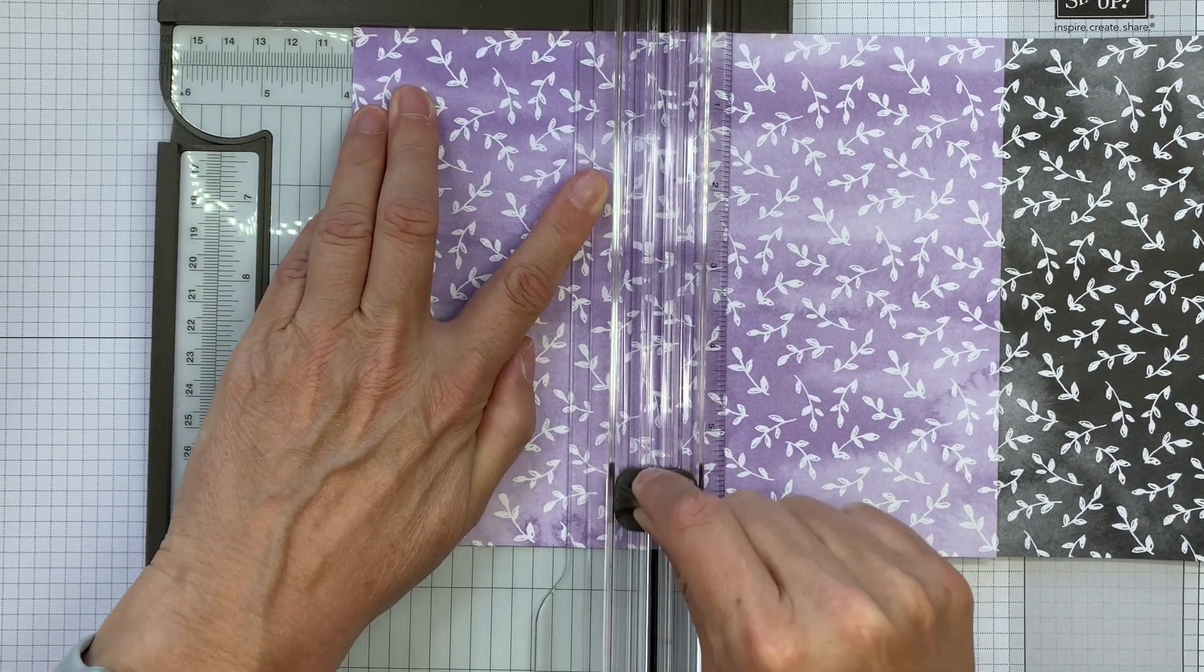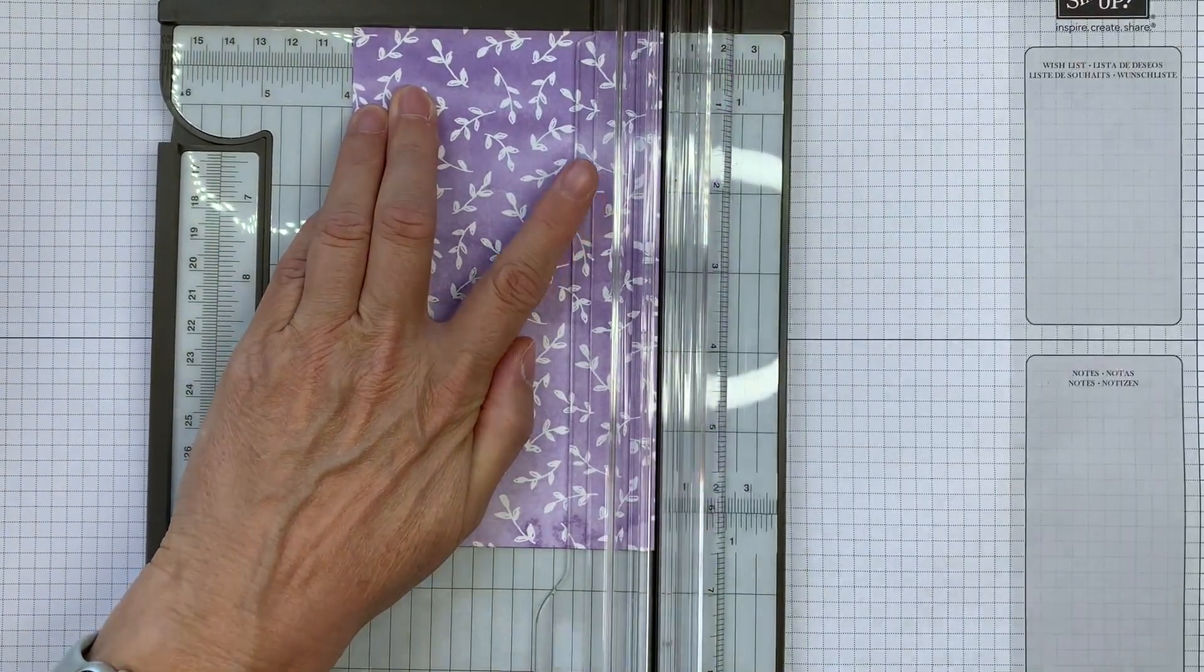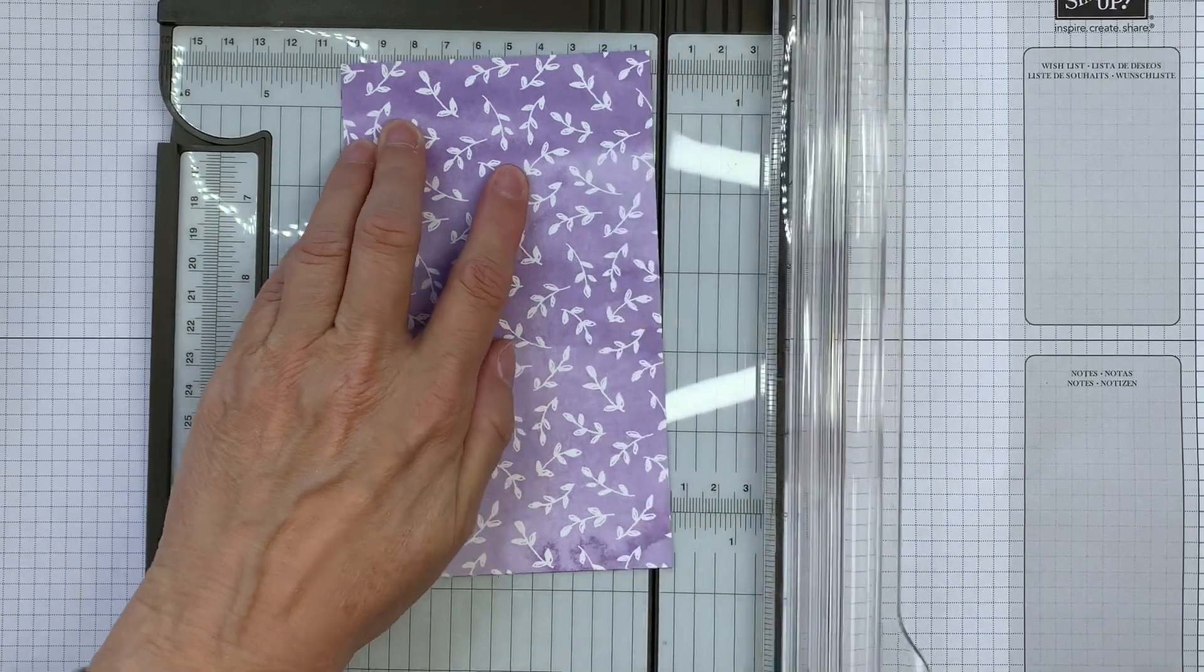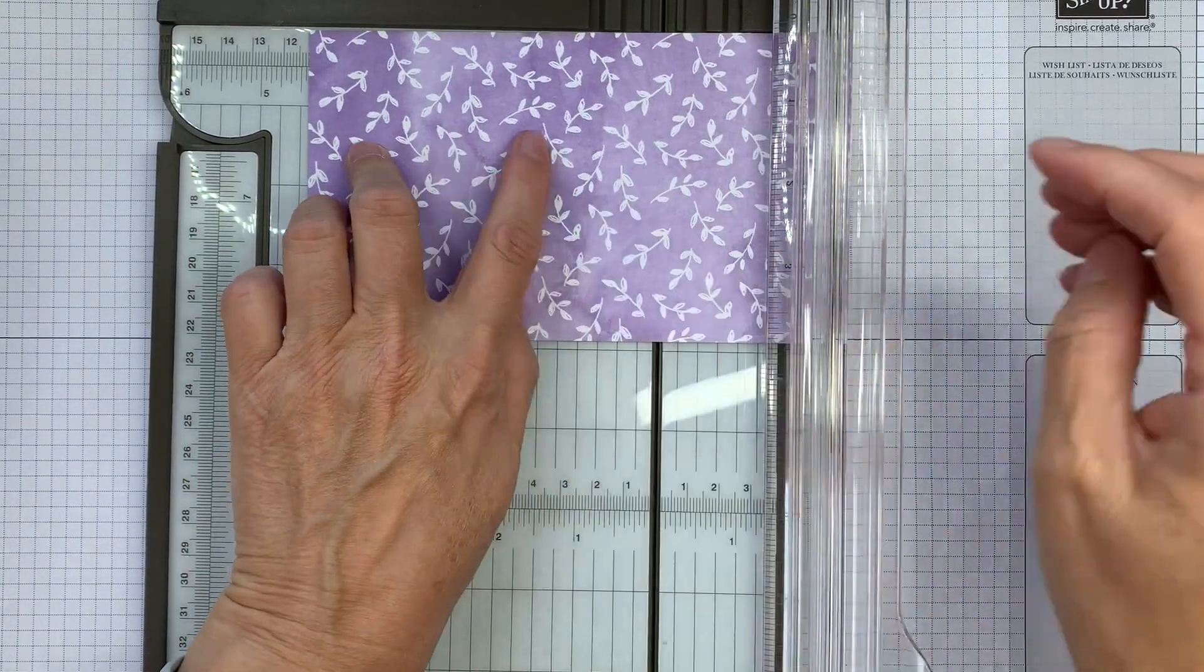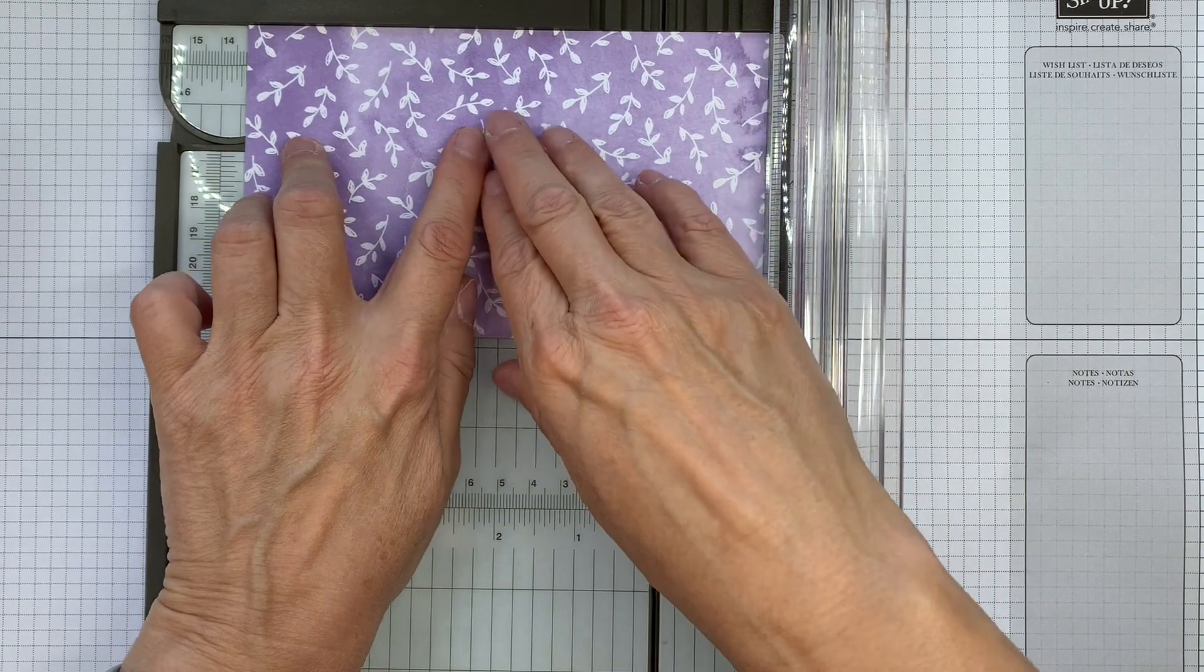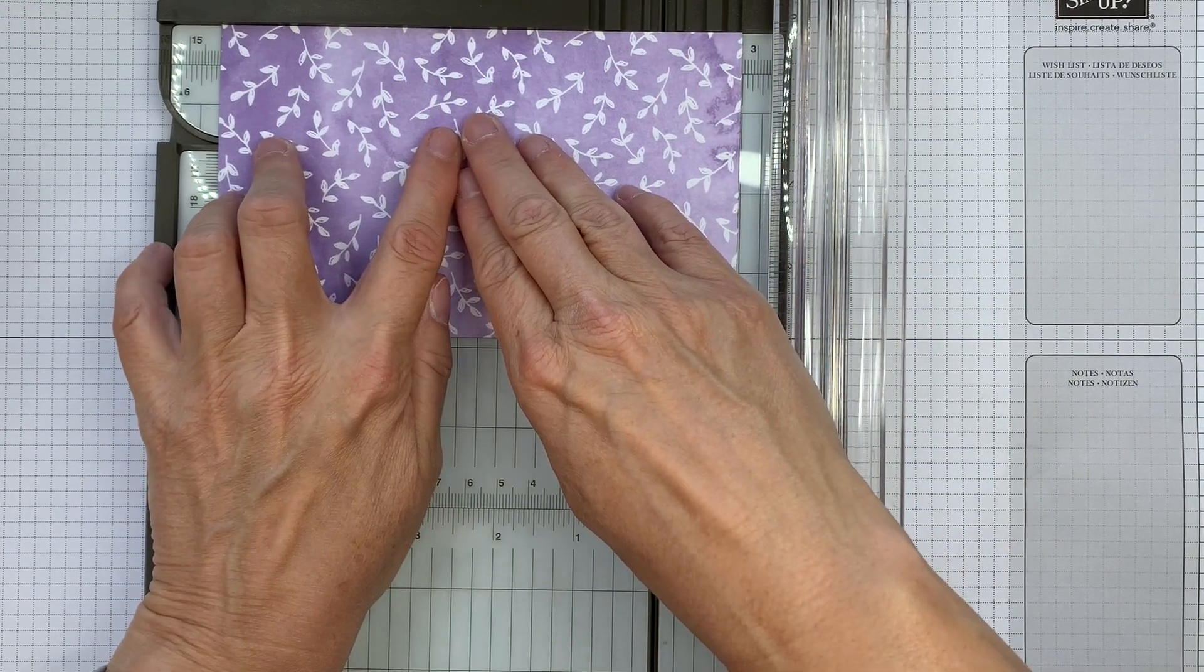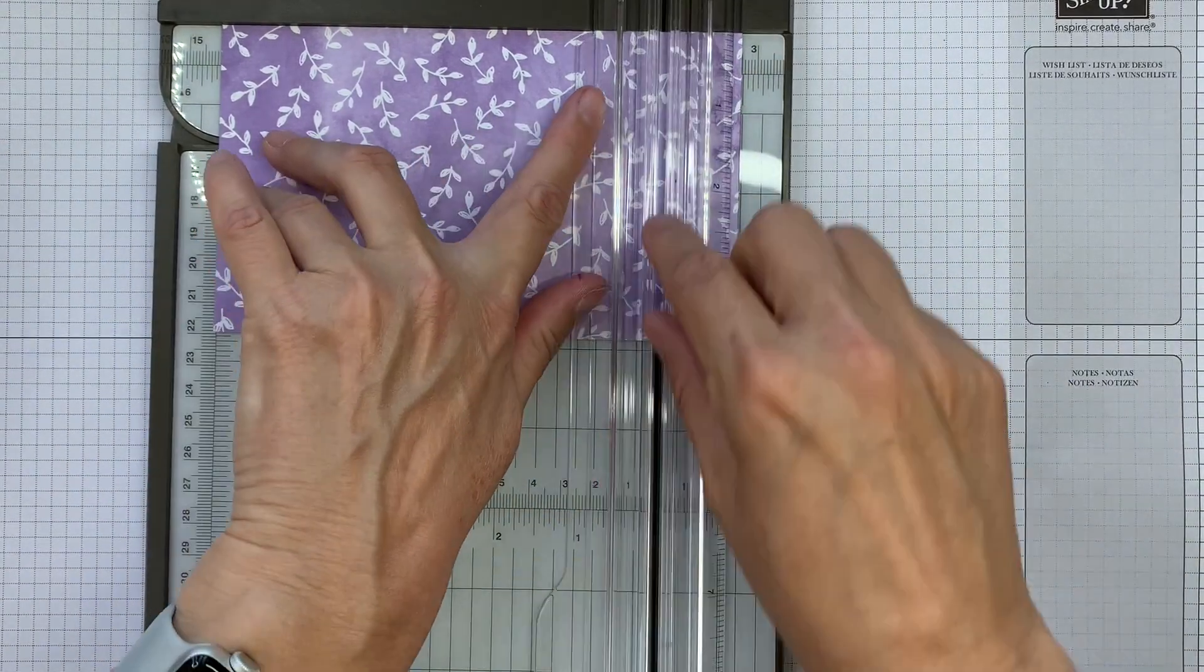So at 3 and 7/8ths I'll cut through and flip that around keeping it aligned. Really important to keep it aligned. You could even washi tape it together temporarily while you cut.